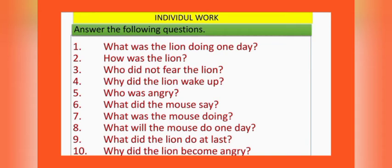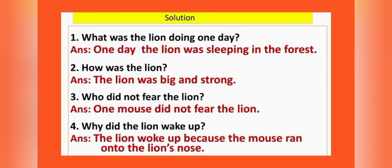I think you are all done. Let's check your answers. Number one: What was the lion doing one day? One day, the lion was sleeping in the forest. Number two: How was the lion? The lion was big and strong. Number three: Who did not fear the lion? One mouse did not fear the lion. Number four: Why did the lion wake up? The lion woke up because the mouse ran onto the lion's nose.